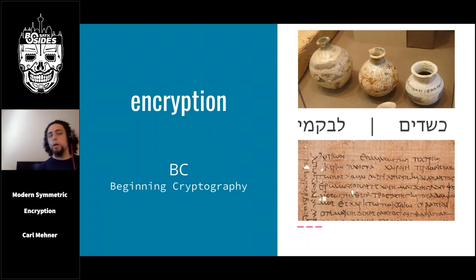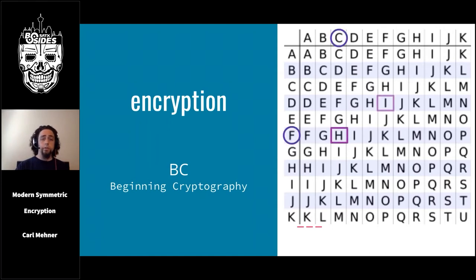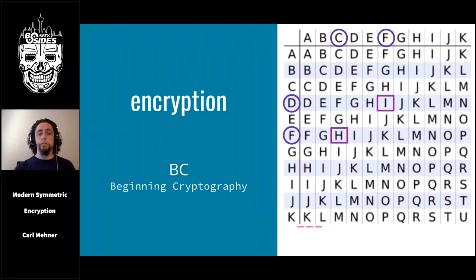Later, Caesar's nephew Augustus modified the cipher and instead of shifting messages three places, only shifted them forward one letter — apparently three was a little too hard. By 1467, encryption schemes started using two block letters and keys based on words and phrases rather than a simple rotation of a number from 1 to 25 like the Caesar cipher.